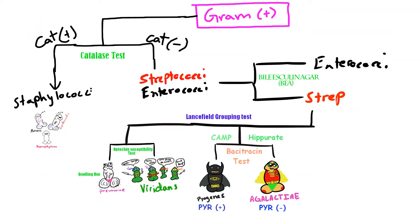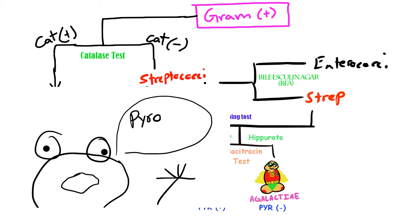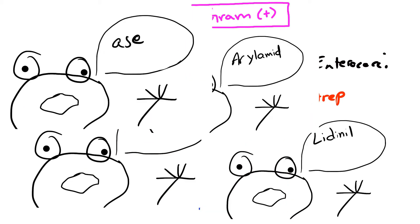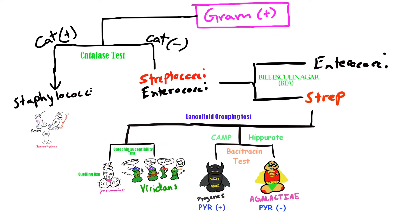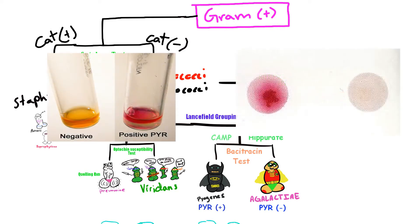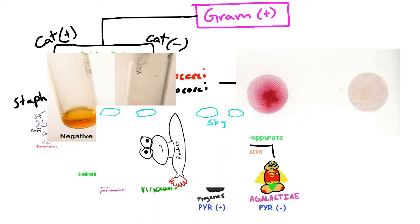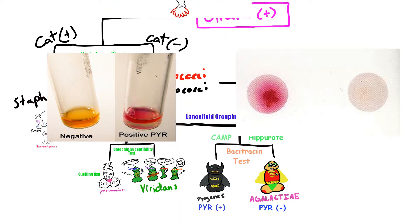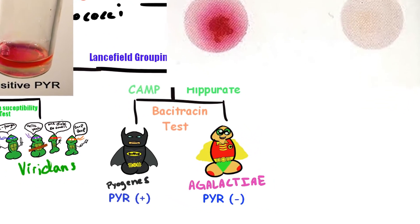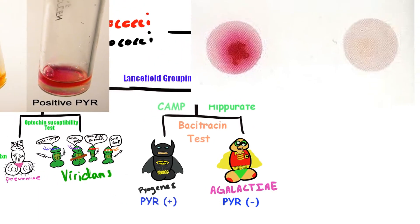Another test is the PYR test, which stands for pyrrolidonyl arylamidase. It's a qualitative test that can quickly identify GAS and certain Enterococci organisms, which formerly used to be known as group D Streptococci. The test checks if the Streptococci can enzymatically hydrolyze L-pyrrolidonyl beta-naphthylamide. Streptococcus agalactiae is PYR-negative, so it can't hydrolyze it.